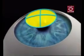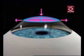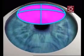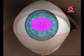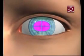In astigmatism, the curve along one meridian is steeper than the curvature along the other. This causes the front surface of the cornea to be shaped more like a football.